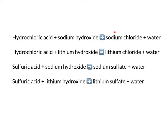What makes the difference between sodium and lithium? What makes the difference between chloride and sulfate? Let's look at the reactants. We have hydrochloric acid and sodium hydroxide. The sodium hydroxide means we get sodium chloride; the lithium hydroxide means we get lithium chloride. Sodium hydroxide gives sodium sulfate; lithium hydroxide gives lithium sulfate. So it seems that it's the alkali that gives us the first part of the salt.